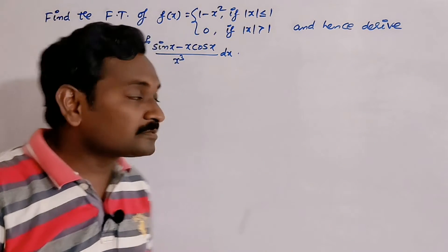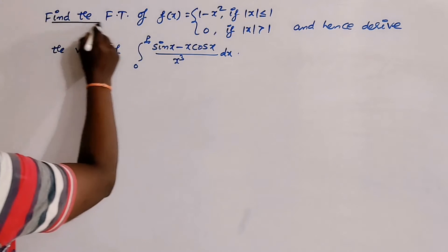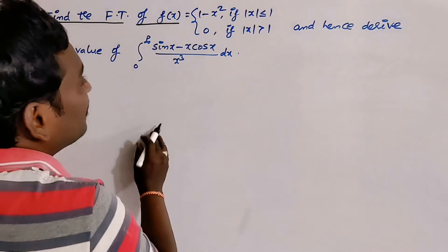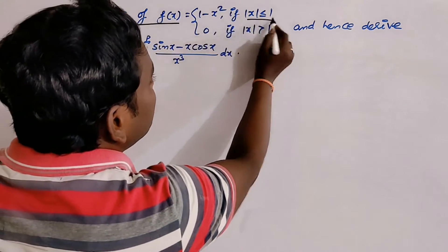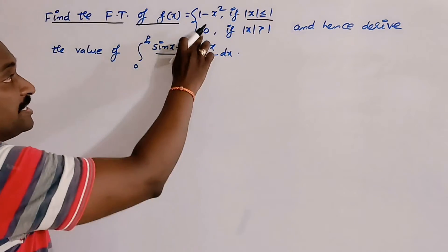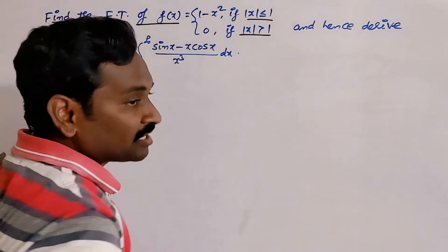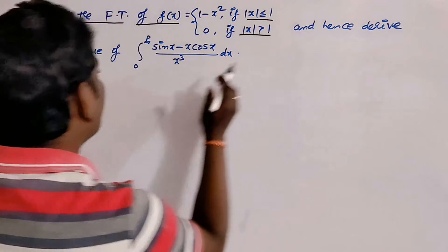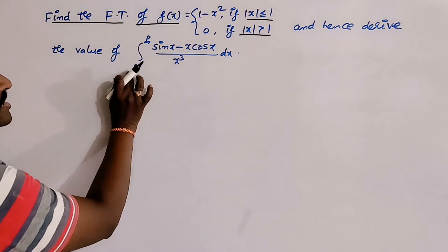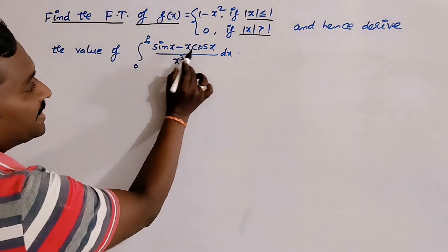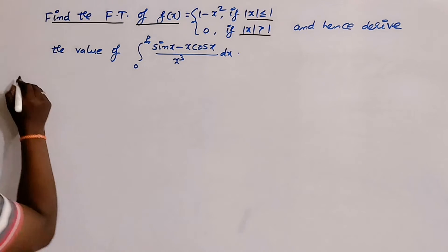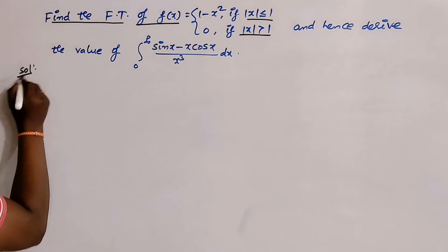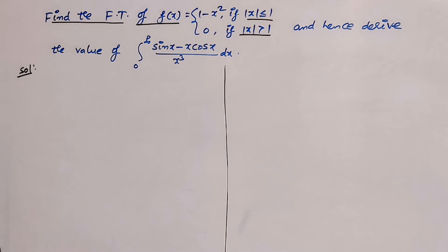The next problem on Fourier transforms: find the Fourier transform of the function f(x) defined by 1 minus x² if |x| ≤ 1, and 0 if |x| > 1. After that, we have to derive the value of the definite integral from 0 to infinity of (sin x minus x cos x) divided by x³ dx.